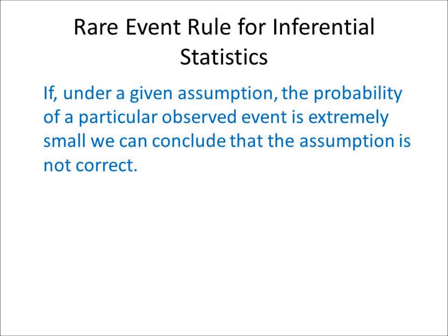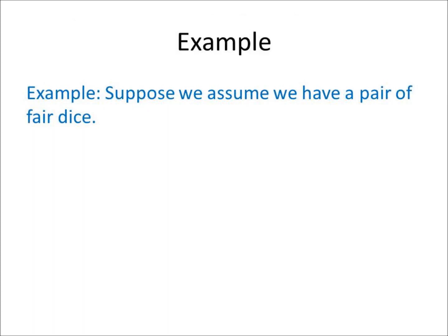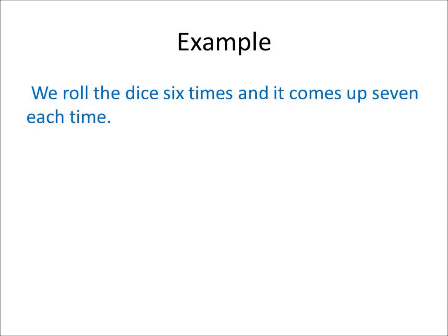Read the definition. Here's an example. Suppose we have a pair of dice — this is our assumption. Now suppose we roll the dice six times and it comes up seven each time. This is our observed event.